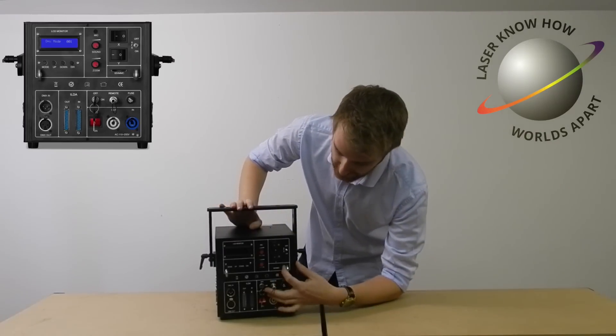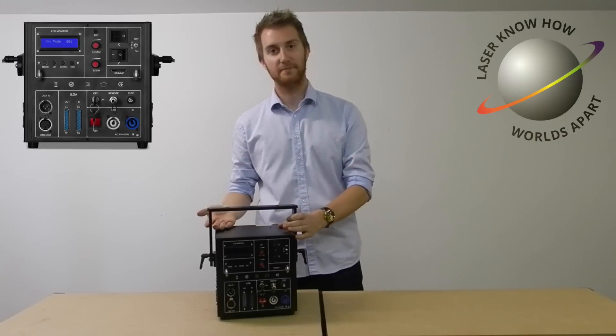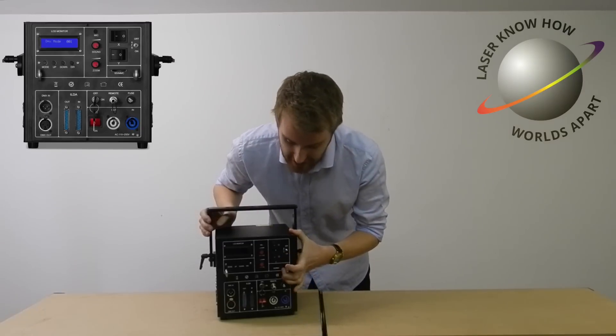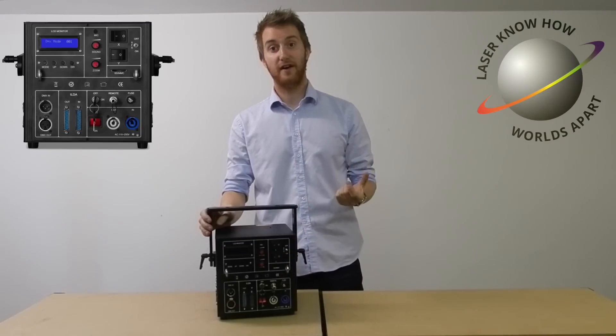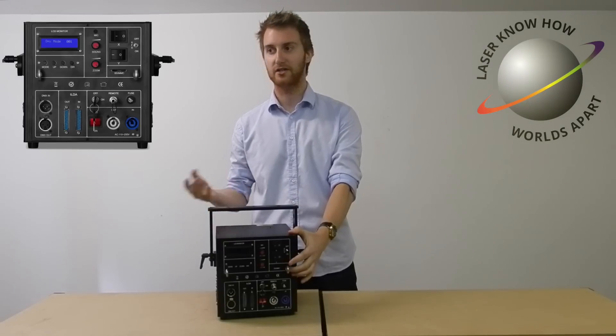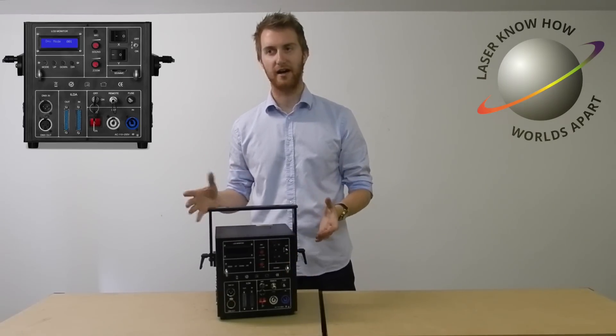If we go up from there you've got an SD card slot, again something which for a laser at this price point and this size is great to have built in. What you can do is you can save laser shows or save laser show files onto that SD card, put it in the back of the laser, hook it up with DMX to your normal lighting console.